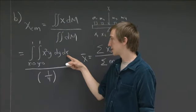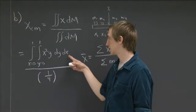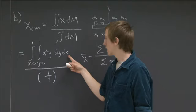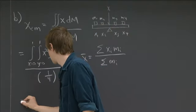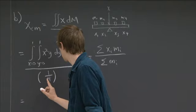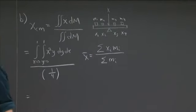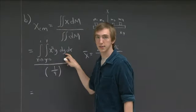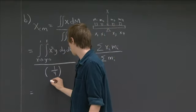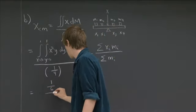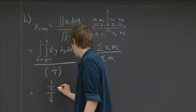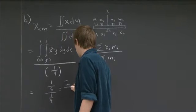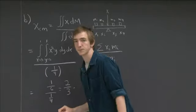So the numerator here is fairly straightforward to compute. And if you do this, you'll get, I believe, 1 sixth. So we have 1 sixth over 1 fourth, and so canceling off, this is 2 thirds.